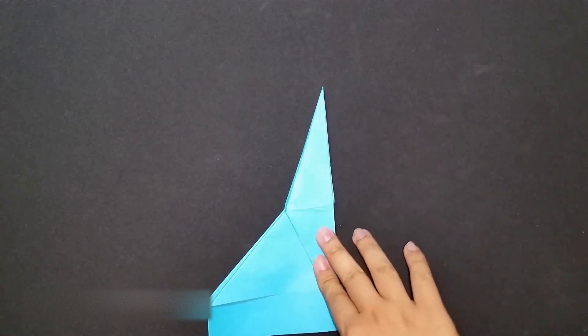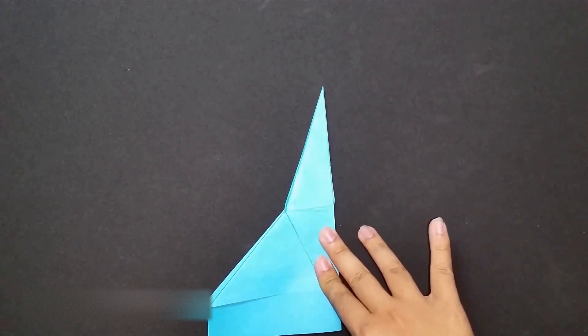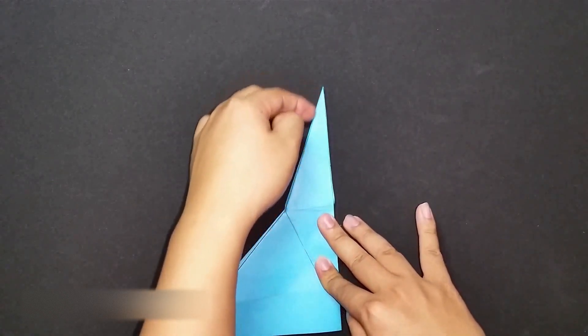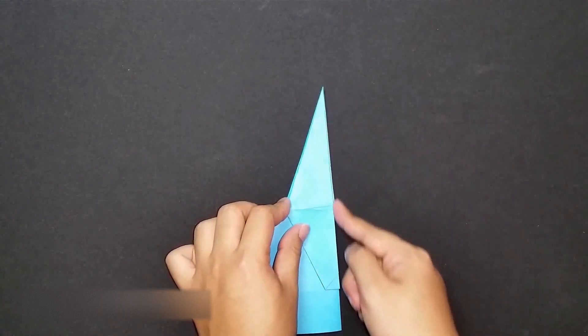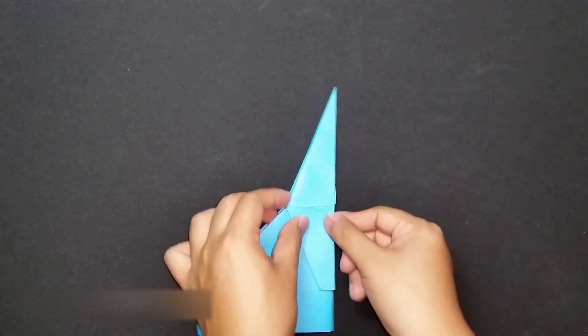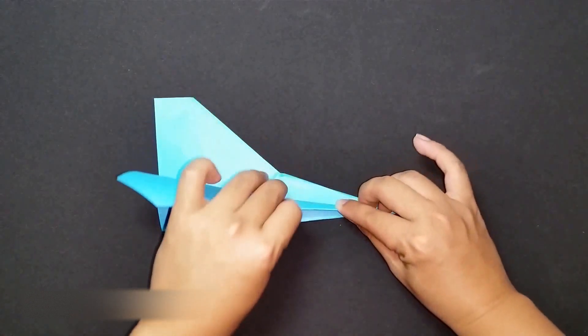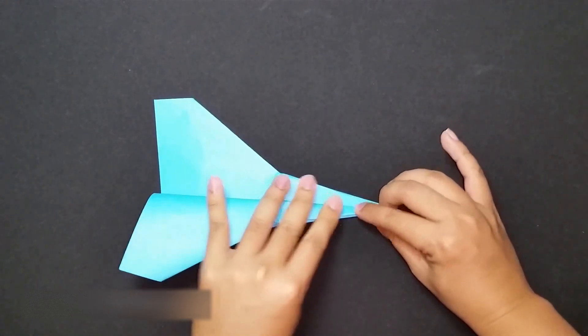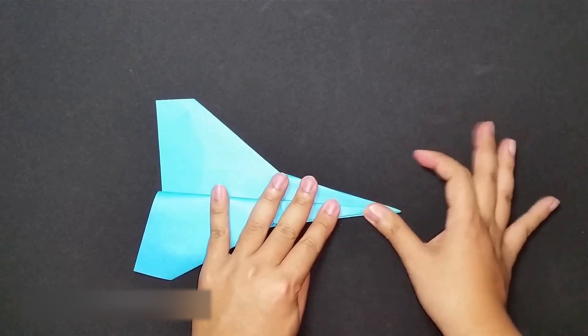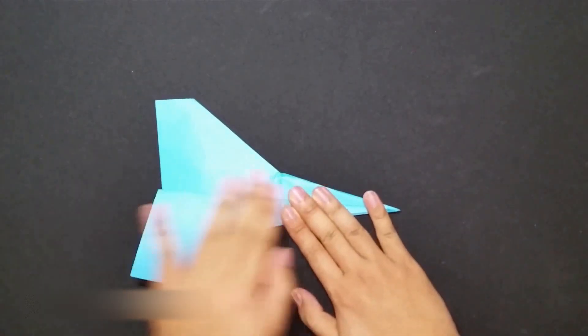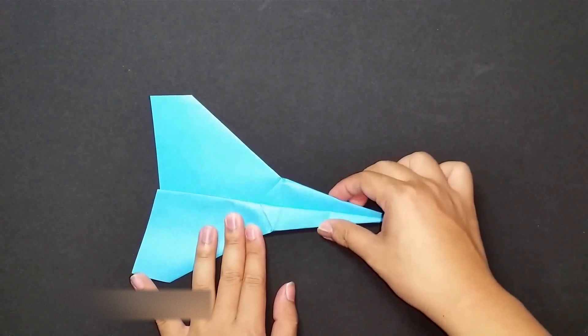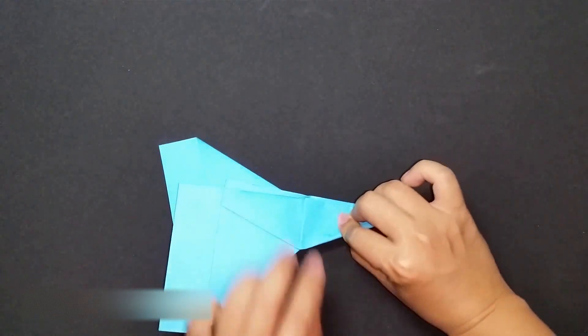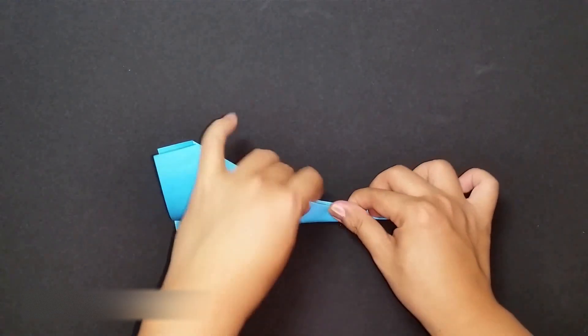And next step, we are going to create the wings. We use this edge, and this edge as preferences to fold. So, I will do it now. And repeat the same step for the other side. You can turn the paper over like this. For this side.